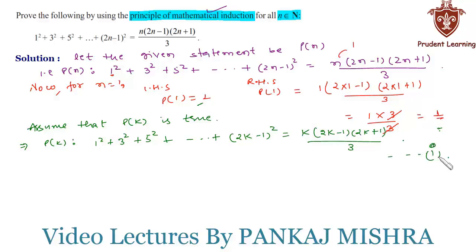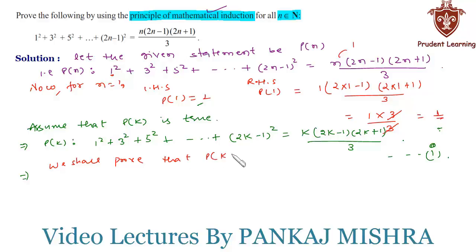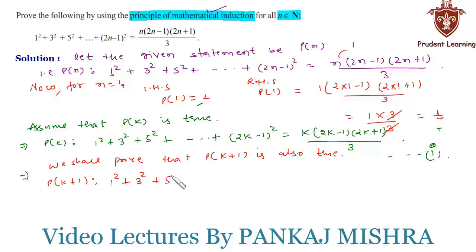In our final step, that is our generalization step, we shall prove that P(k+1) is also true. P(k+1) states that 1² + 3² + 5² + ... + (2k-1)² + (2k+1-1)² = 1² + 3² + ... + (2k-1)² + (2k+1)² must equal the required expression.